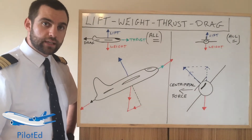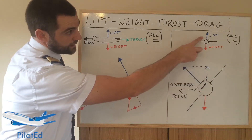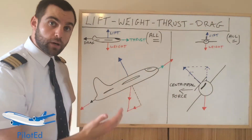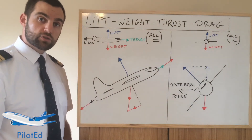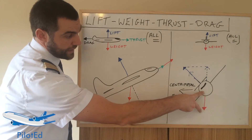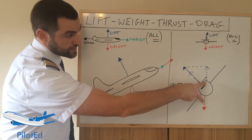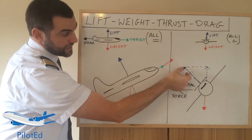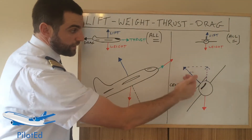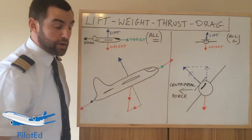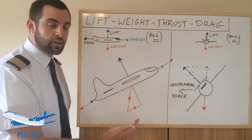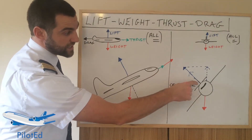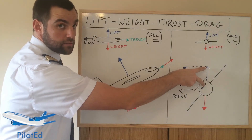Now, why do we need extra lift in a turn? As you can see, in straight and level flight, lift and weight would be equal. Now if we turn the aircraft, that lift vector is going to come off to the side, because it's always going to be perpendicular to the wing. Weight will always be straight down towards the centre of the earth. So to counter that vertical component of the weight, you can now see that we would need an extra bit to counteract that vertical component. The other component of the lift gets turned into centripetal force — it's that horizontal component of the lift which makes the aircraft turn. So the bigger the angular bank is, the more lift we would need to counteract the vertical component of the weight.